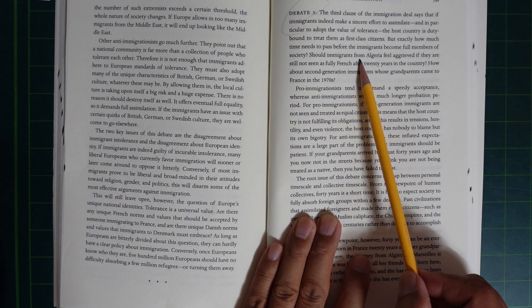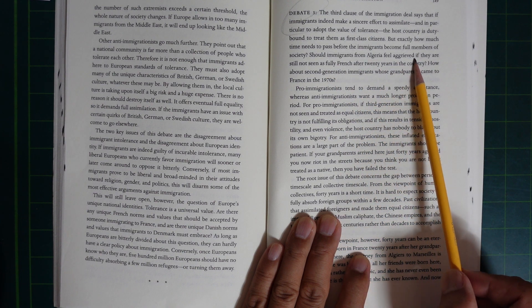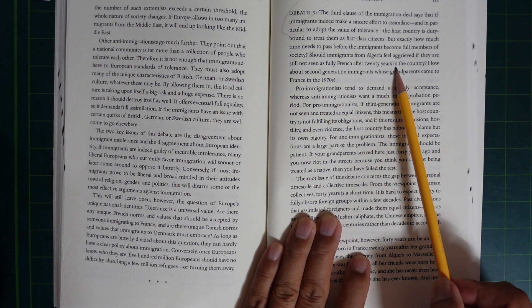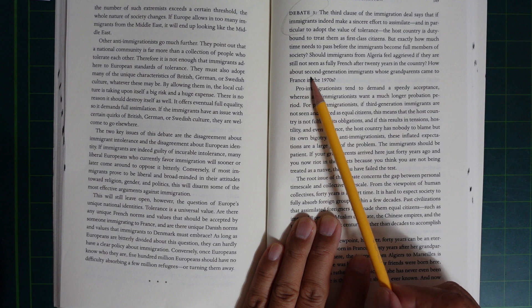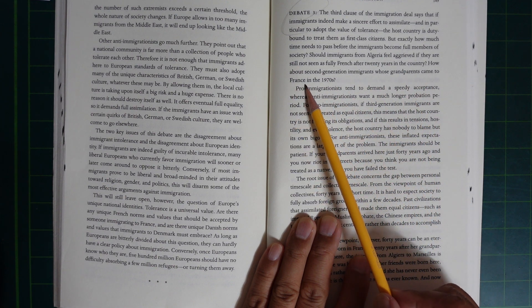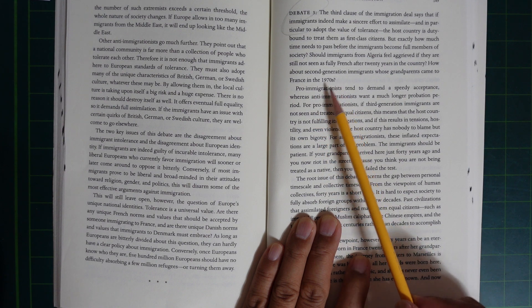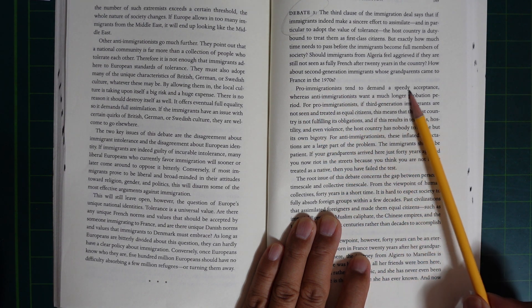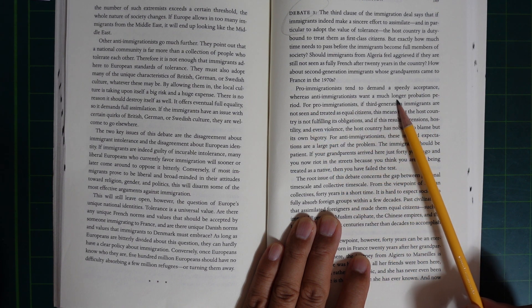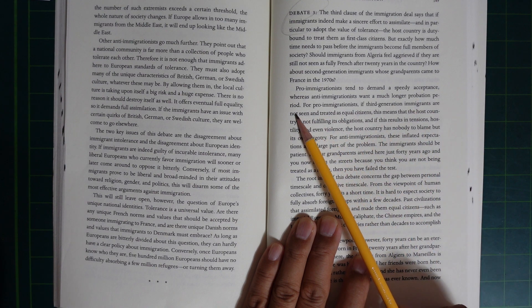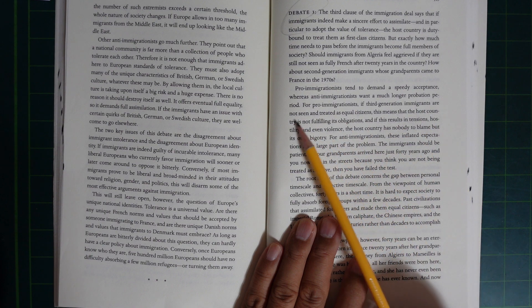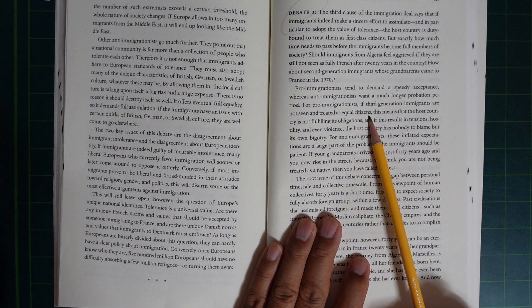Should immigrants from Algeria feel aggrieved if they are still not seen as fully French after 20 years in the country? How about second-generation immigrants whose grandparents came to France in the 1970s? Pro-immigrationists tend to demand speedy acceptance, whereas anti-immigrationists want a much longer probation period.